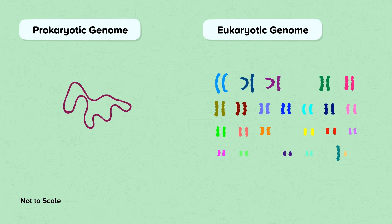In prokaryotes, the genome is just one circular chromosome that is free in the cytoplasm. In eukaryotes, the genome is several linear chromosomes found in the nucleus.